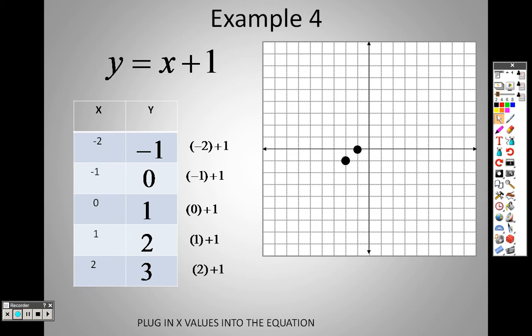So the next one is 0, 1, which means I move over nothing and up 1, and I put a point in there. Then the next one says I move over positive 1 to the right and I move up 2. Put a point there. And then the last one says I move over 2 and I move up 1, 2, 3 and put a point. And I connect them with a line. And there's my line.